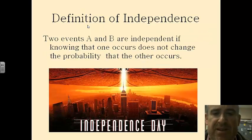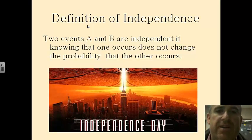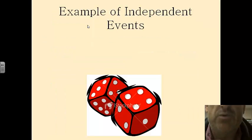Declaration of Independence. Independence Day! Love that movie. Two events, A and B, are independent if knowing that one occurs does not change the probability that the other occurs. So for example, flipping a coin and rolling a dice. If I know I got a heads on the coin, that's not going to have any effect at all on the dice. So two events are independent in that situation.